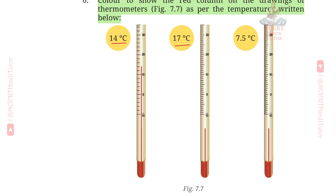Second is 17 degrees Celsius. Count up the scale: 11, 12, 13, 14, 15, 16, 17. Mark the column here at 17 degrees Celsius.